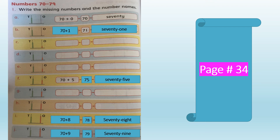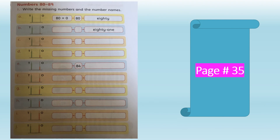Now revise the numbers from 70 to 79 with correct spellings. On page 35 we will learn the numbers from 80 to 89. You have to solve from part A to J, and part A has been solved for you. In part B, there is 1 bead in the ones rod and 8 beads in the tens rod. So 80 plus 1 makes 81. The number name is E-I-G-H-T-Y, hyphen or space, O-N-E — eighty-one, 81.